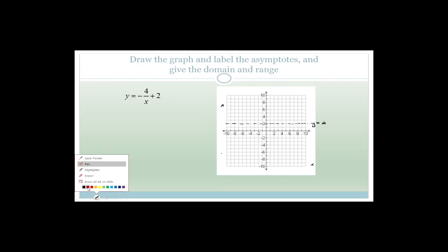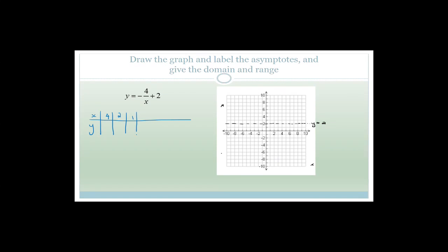Now what we want to do is draw a table of x and y values. We're going to go: four, two, one — I'm not going to worry about zero because zero is going to give me the asymptote — so straight into minus one, minus two, minus four. Since this is a hyperbola, I would suggest you do at least a minimum of three points. If you're worried about getting the shape right, feel free to add in more values.